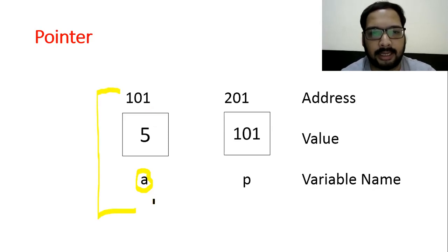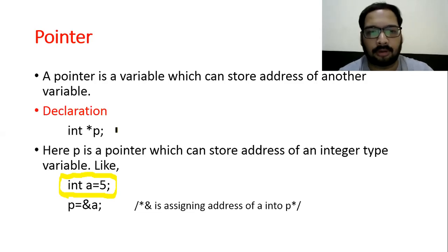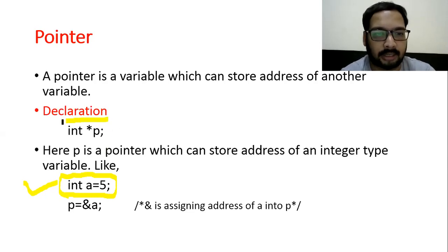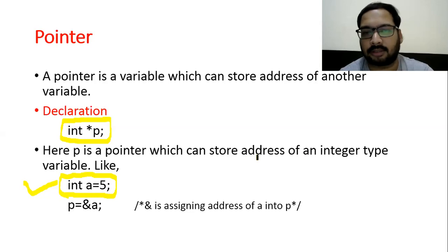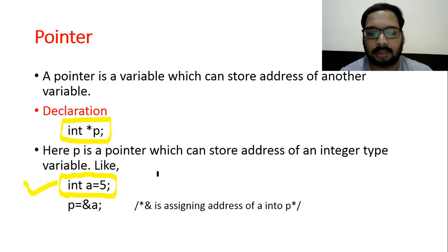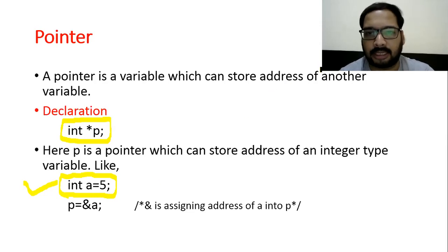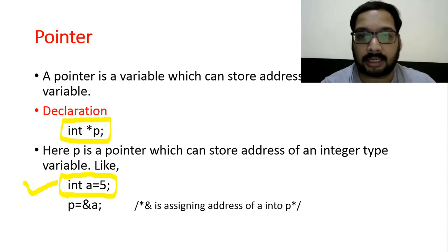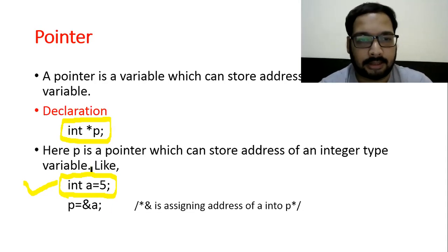This block is for a variable and the right-hand side is for a pointer. For a pointer, you write the statement: int *p. This is known as pointer declaration. Here p is a pointer which can store the address of an integer type variable. You have to take care that the pointer type matches the variable type — if you want to hold the address of a float variable, the pointer type should be float.